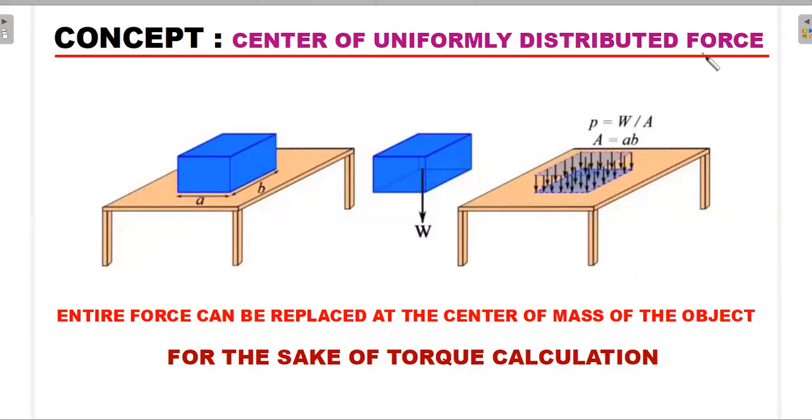Center of uniformly distributed force: when we talk about the center of gravity or center of any uniformly distributed force, we would try to see a place where the entire distributed force can be replaced with a single value in order to calculate the torque. For example, you have a simple block here and each and every dm element of it will have a weight called dmg, and the net sum of all these dmgs, which is mg or weight, is usually kept by us at the center.